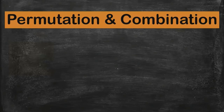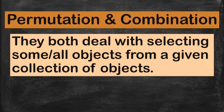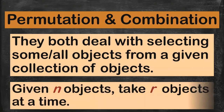So what do we know about permutations and combinations? We all know that they both deal with selecting or choosing some objects or all objects from a given collection of objects. We're given N objects, and then we're going to take R objects at a time.